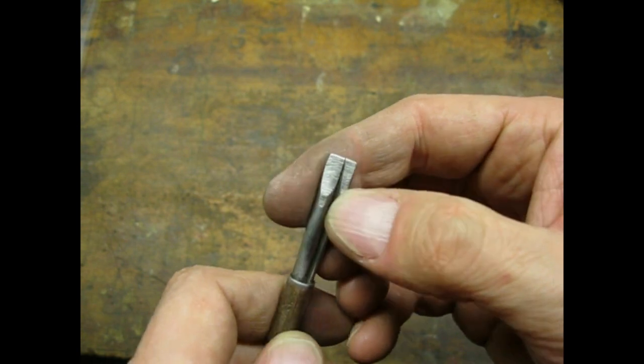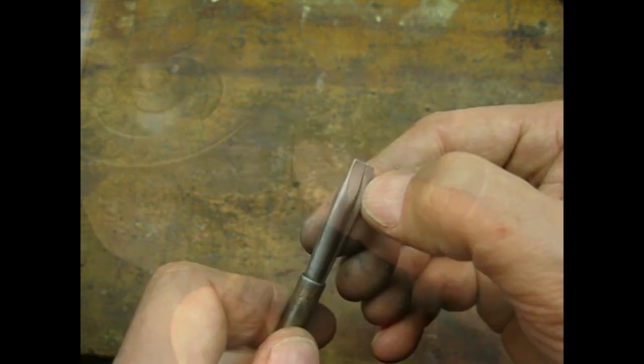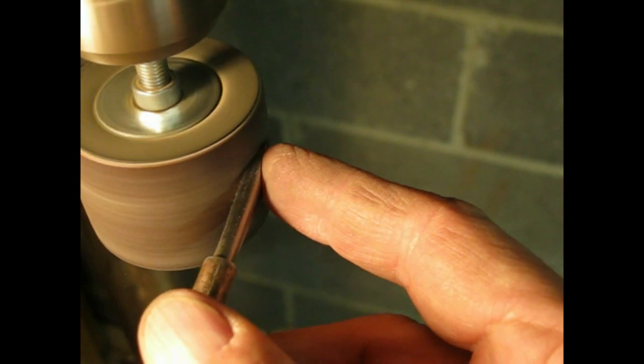The blade on the other screwdriver had pretty deep scratches. Since the blade looked like it was hollow ground, I used a sanding drum in my drill press to match the curvature.